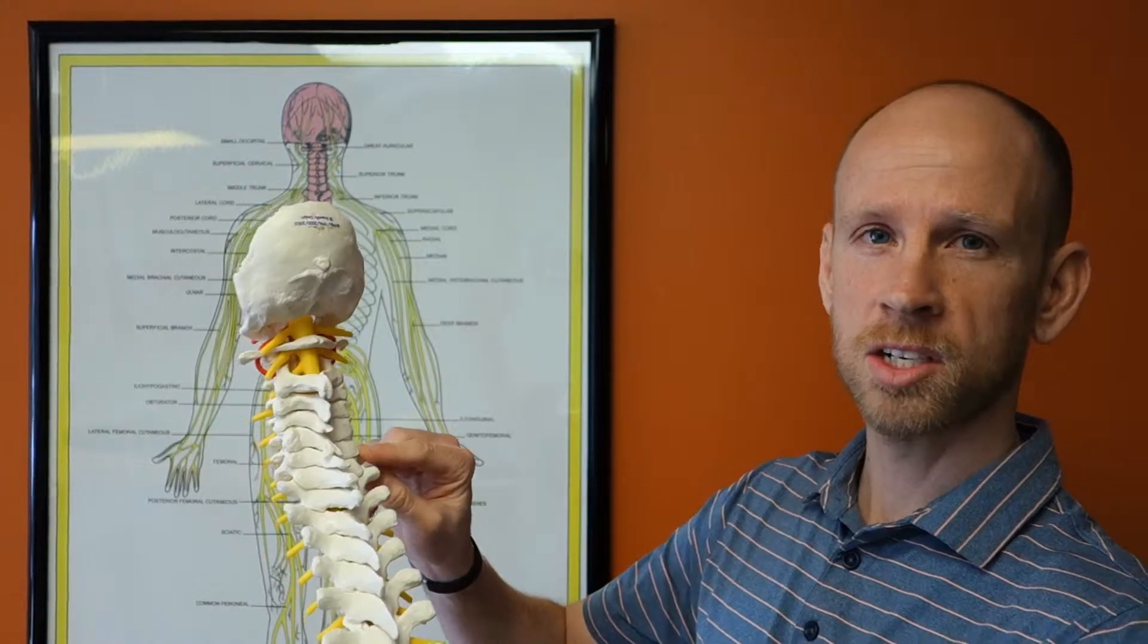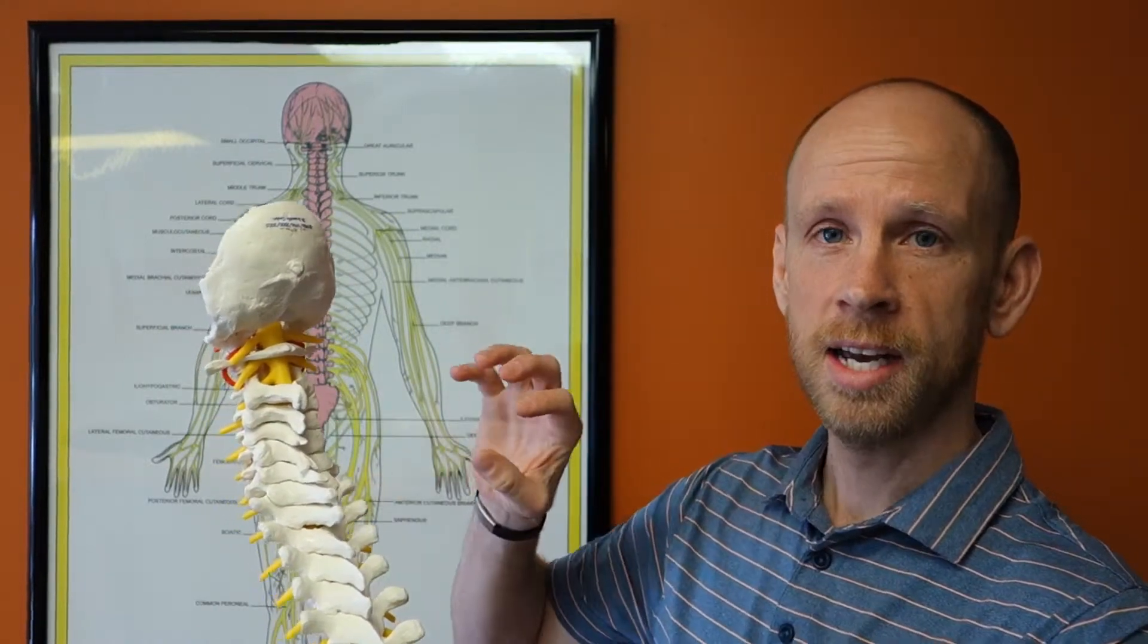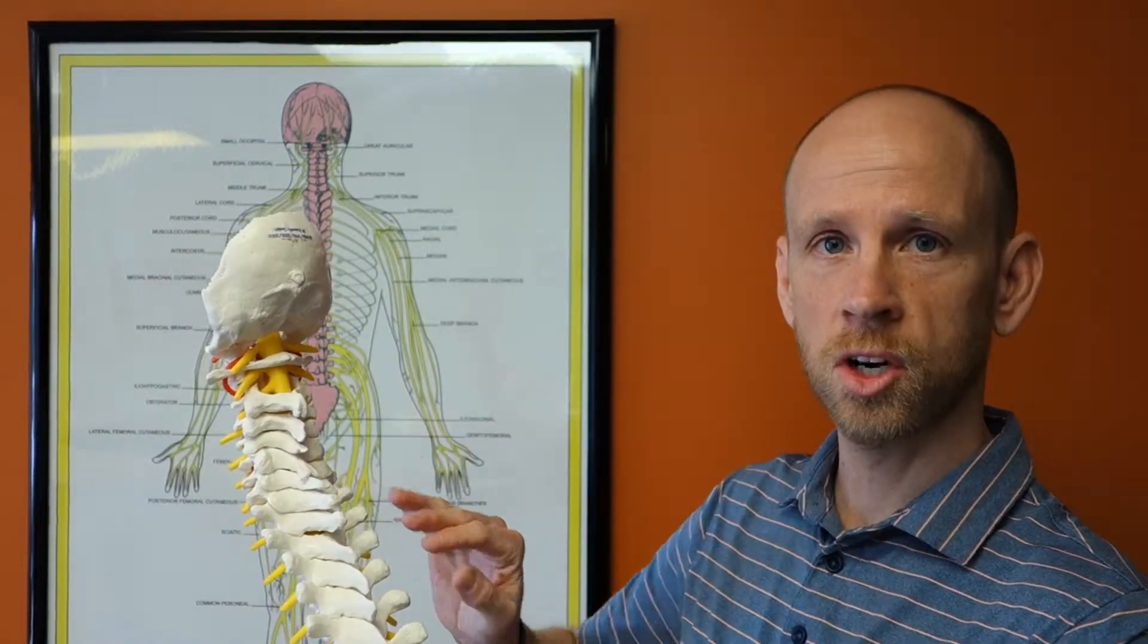And so if you end up with a problem spot in your spine, it can make it so that your brain doesn't get messages through these nerves as clearly. It can't control the healing.